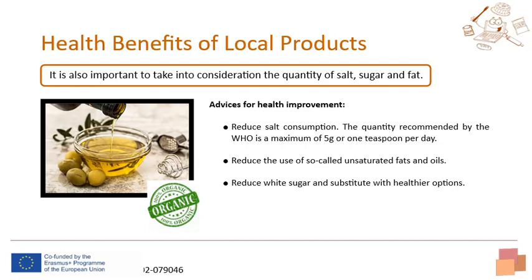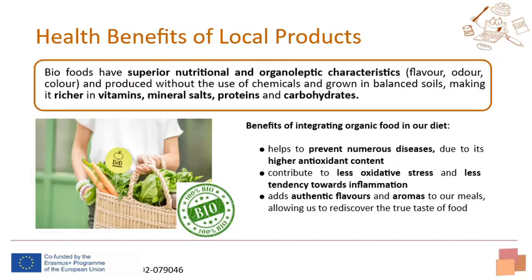As with salt, it is important to be aware that there are many hidden sugars in processed foods. Another type of food with a range of health benefits is organic food. Foods from organic agriculture are grown in balanced soils, being richer in vitamins, minerals, proteins, and carbohydrates compared to industrially produced foods. This type of food has superior nutritional and organoleptic characteristics such as flavor, odor, and color, and is produced without chemical products such as colorings or preservatives. The main benefits of integrating organic food into our diet include helping to prevent numerous diseases, contributing to lower oxidative stress, and adding authentic colors, flavors, and aromas to our meals.